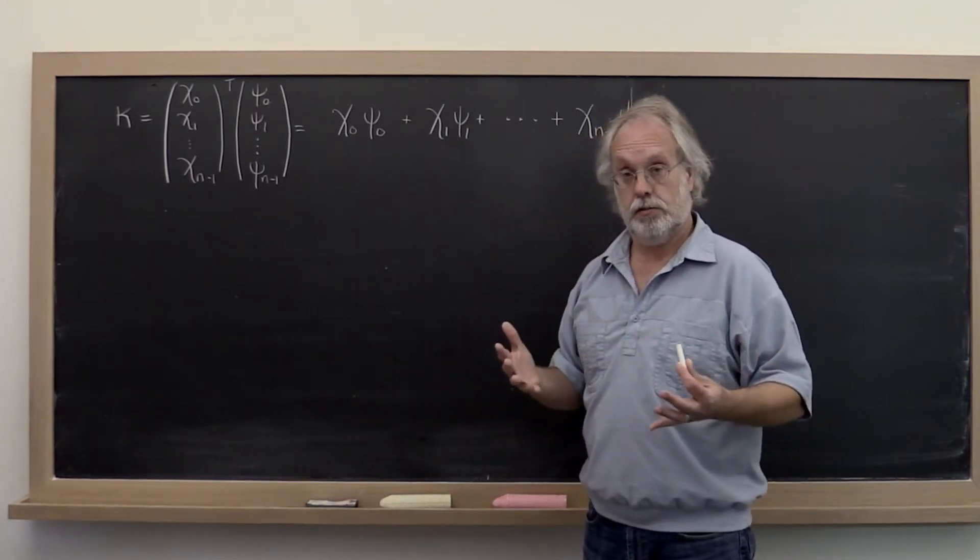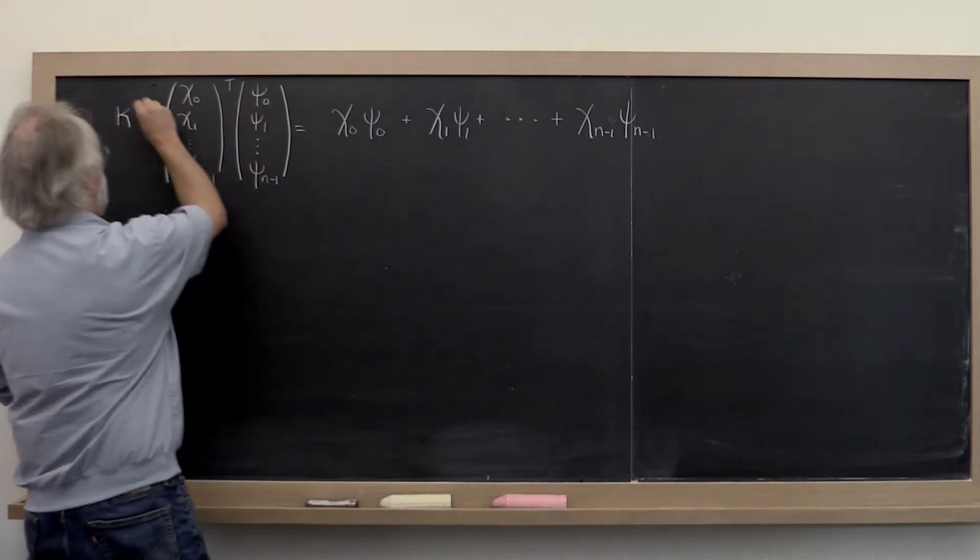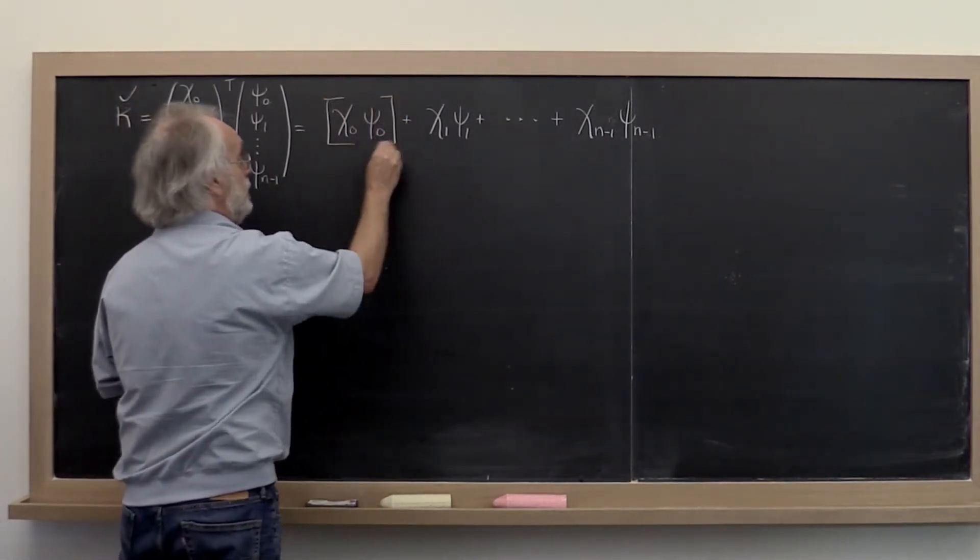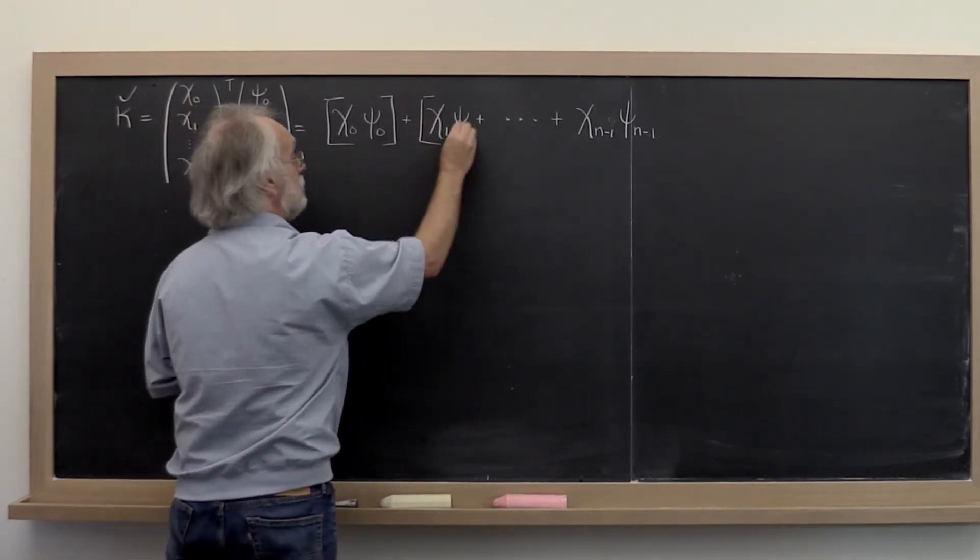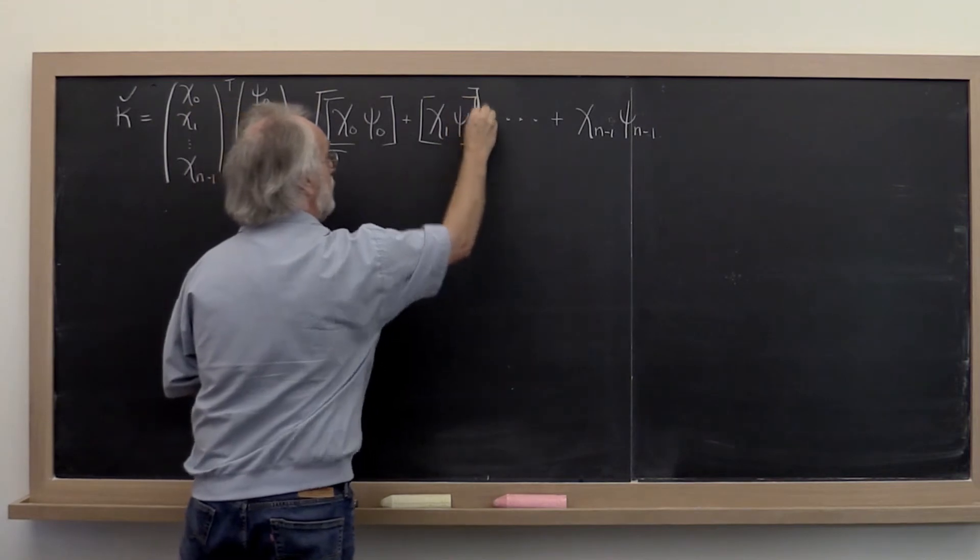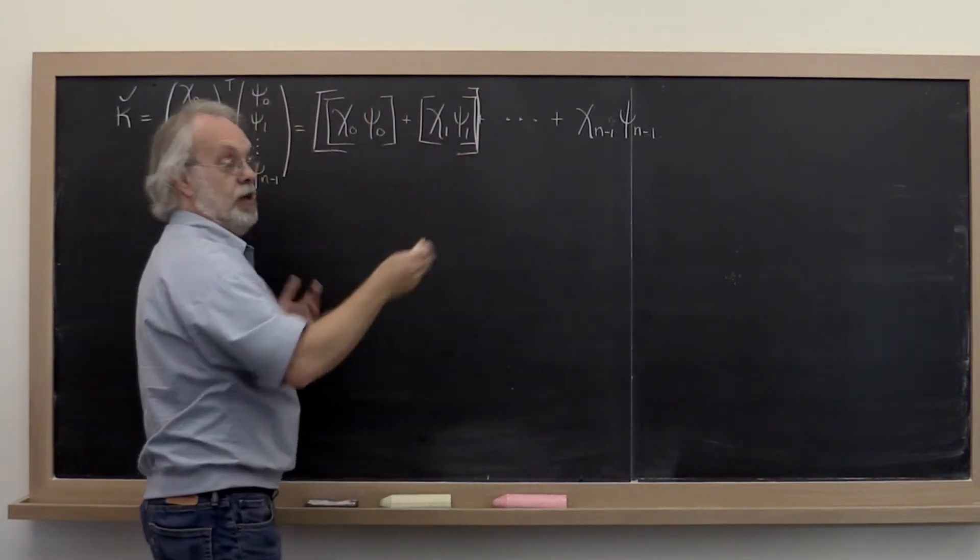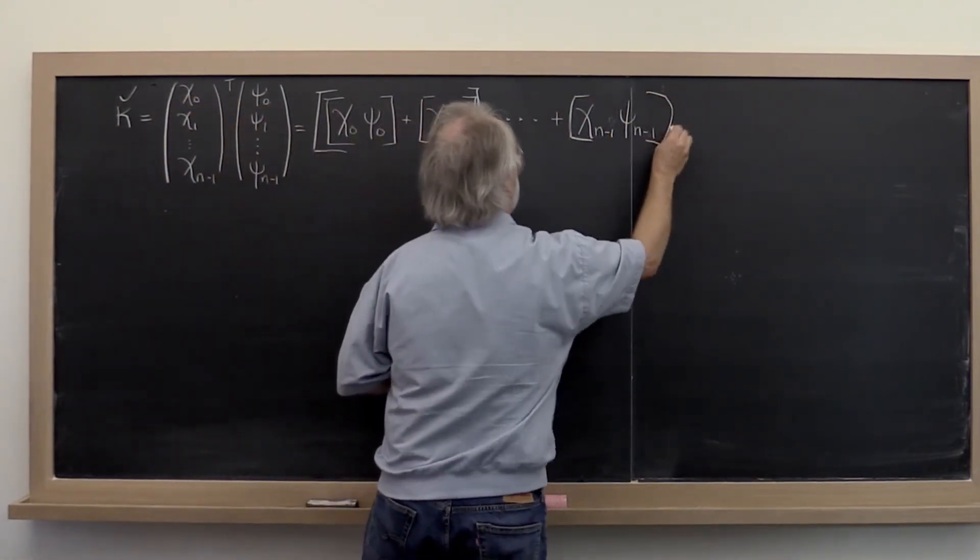Order obviously matters. So what's happening here is that when we compute kappa check, these multiplications will happen first. You can think of it as this multiplication happens, then this multiplication happens, then this addition happens, then the next multiplication happens, then the next addition happens, and so forth.